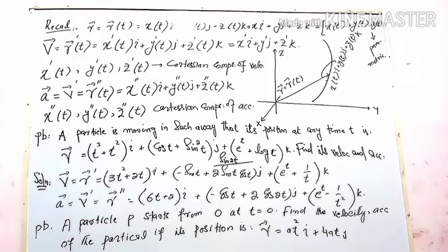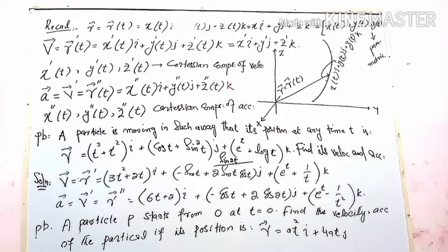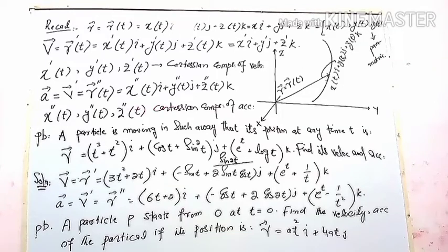The particle acceleration is v prime of t, equal to dv by dt. This is the double derivative of the position vector: x double prime i plus y double prime j plus z double prime k. These are the Cartesian components of acceleration along the coordinate axes — x-axis, y-axis, and z-axis.